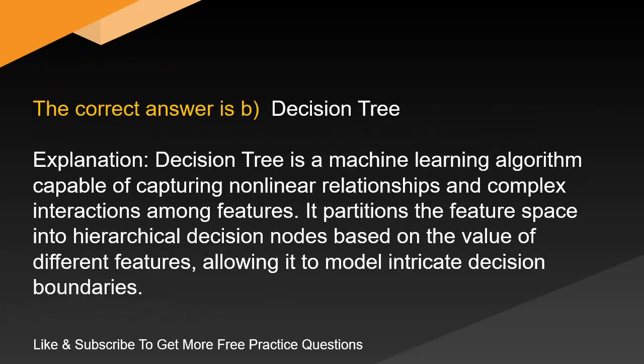The correct answer is B. Decision tree. Decision tree is a machine learning algorithm capable of capturing non-linear relationships and complex interactions among features. It partitions the feature space into hierarchical decision nodes based on the value of different features, allowing it to model intricate decision boundaries.